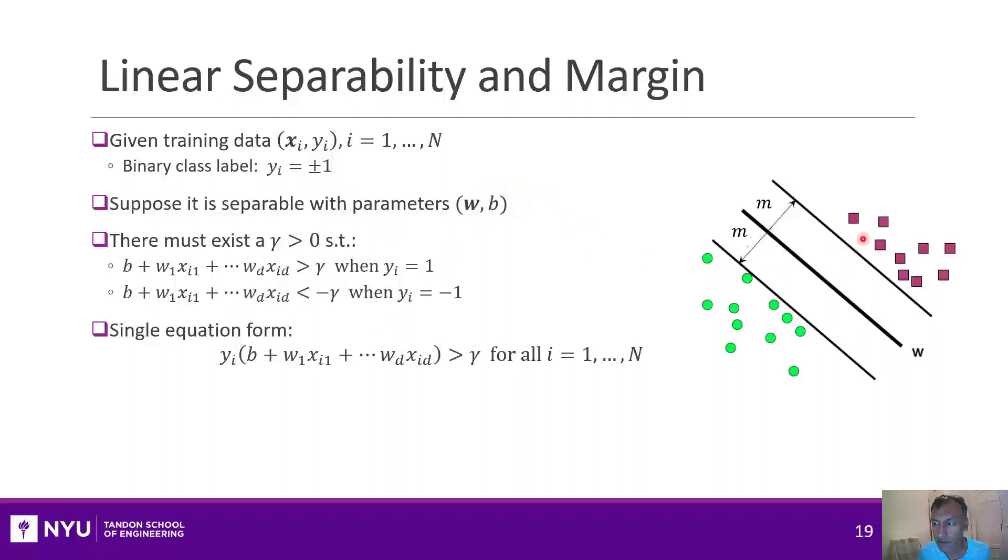Well, if I can find a hyperplane, it means I can find a function, a linear function, that's positive on all these samples and negative on all these samples. Or, in other words, for all the positive samples, it has to be greater than some gamma. And all the negative samples, it has to be less than some minus gamma. And if we want to be fancy, we can write these two equations in a single form, like this.